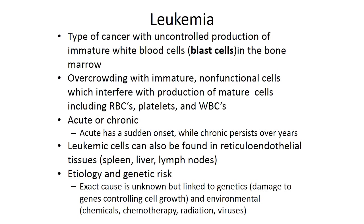Leukemia is the first type of cancer we will cover. Leukemia occurs when there is an uncontrolled production of immature white blood cells, or blast cells, in the bone marrow. These immature cells overcrowd and interfere with the production of mature cells — our white blood cells, red blood cells, and platelets. Leukemia can be seen in different populations and age ranges, but commonly occurs in younger populations.